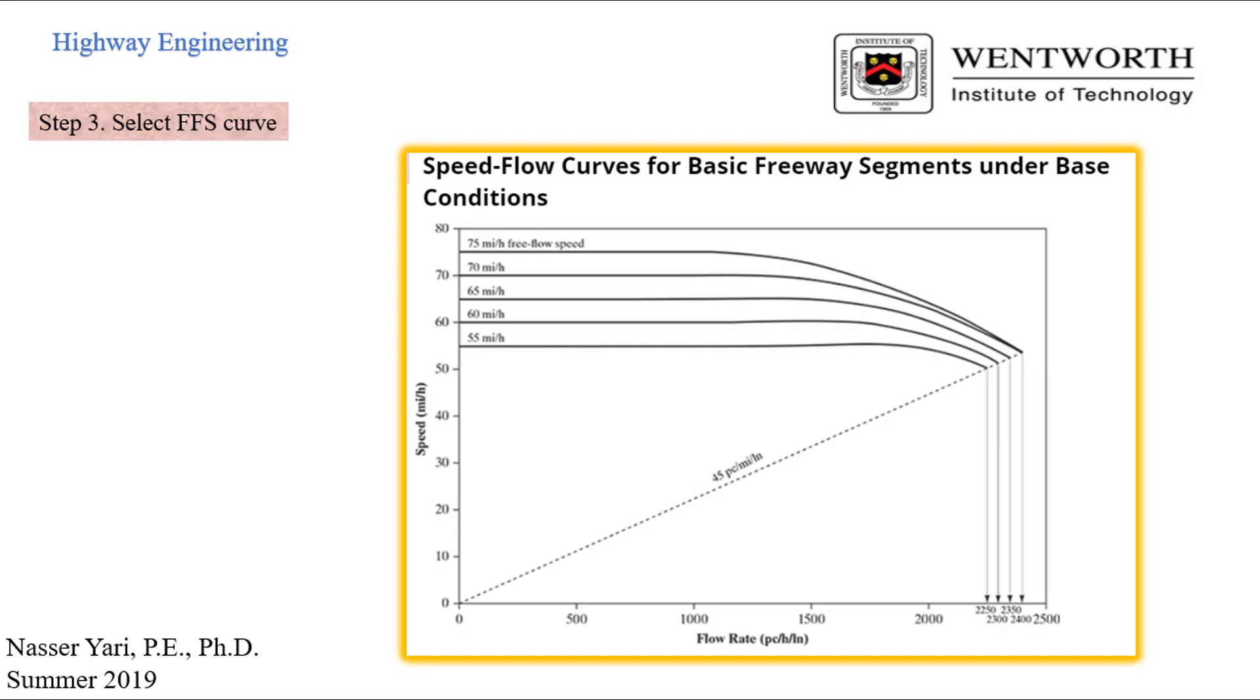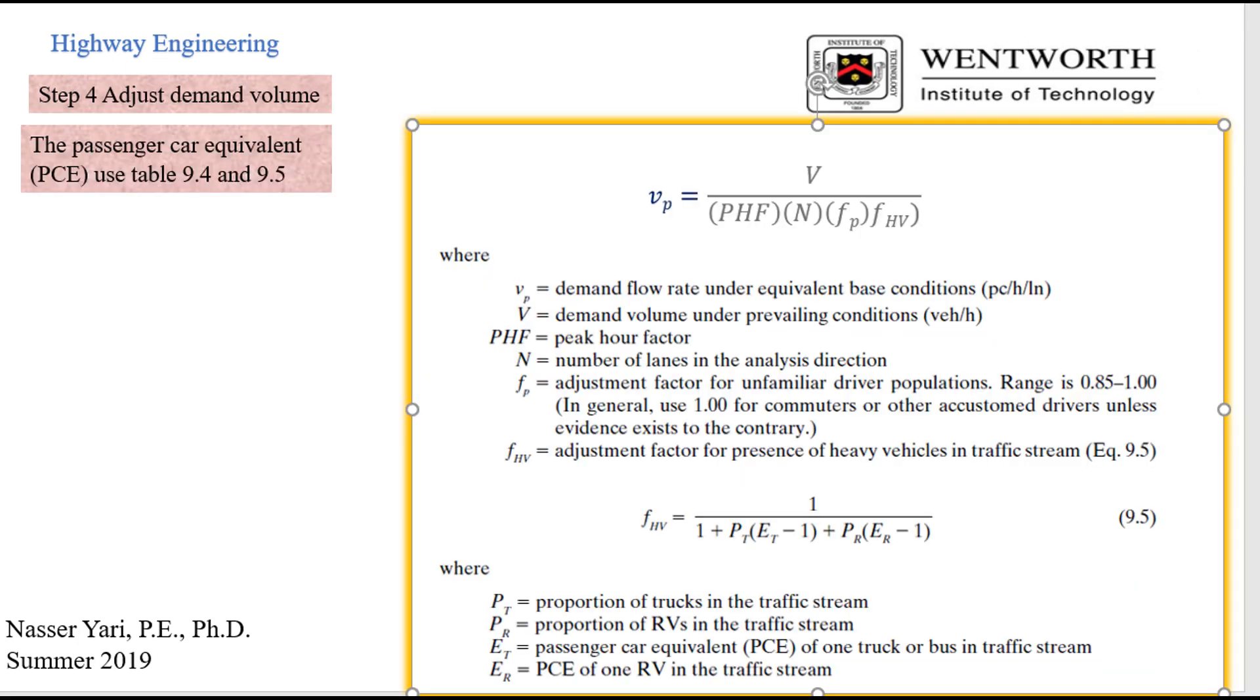We're going to move over to step three, select the FFS curve. And from there, we're going to move over to step four, adjustment demand volume. And when we do this, you have to be careful because you got to have the peak hour factor, which is given, number of lane. And FP is for the familiarity of the driver. If they're lost, it's going to be 0.85. If they know where they go, the commuter, we're going to use a factor of one. And then we have FHV.